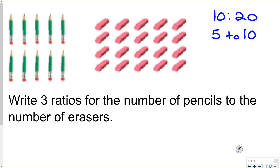Or maybe we look at them in groups of 5 — we would have 2 groups of 5 pencils compared to 4 groups of 5 erasers. Or maybe we look at them as groups of 10; in that situation we would have 1 group of 10 to 2 groups of 10. So 10 to 20, 5 to 10, 2 to 4, and 1 to 2 would all be equivalent ratios because they're still telling you the same thing about the pencils and the erasers.